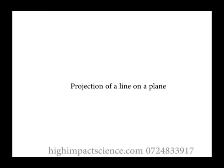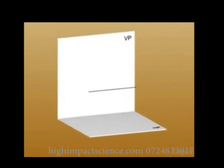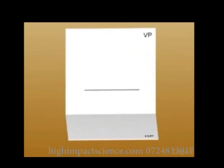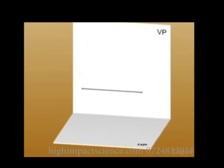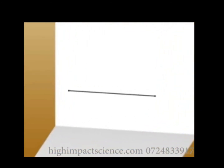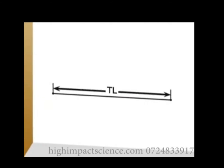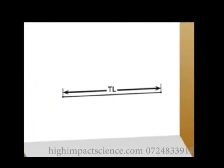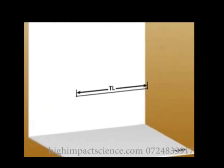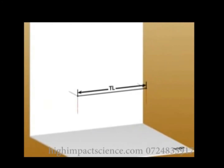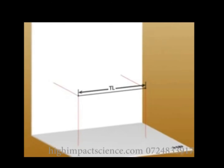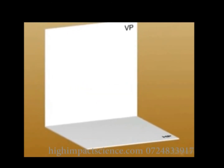Next: projection of a line on a plane. A straight line is a one-dimensional element connecting two points by the shortest distance, and the length is always a true length. The projection of a line can be obtained by drawing the projections of its endpoints on a flat plane. In this diagram, we have a vertical plane, VP, and a horizontal plane, HP.